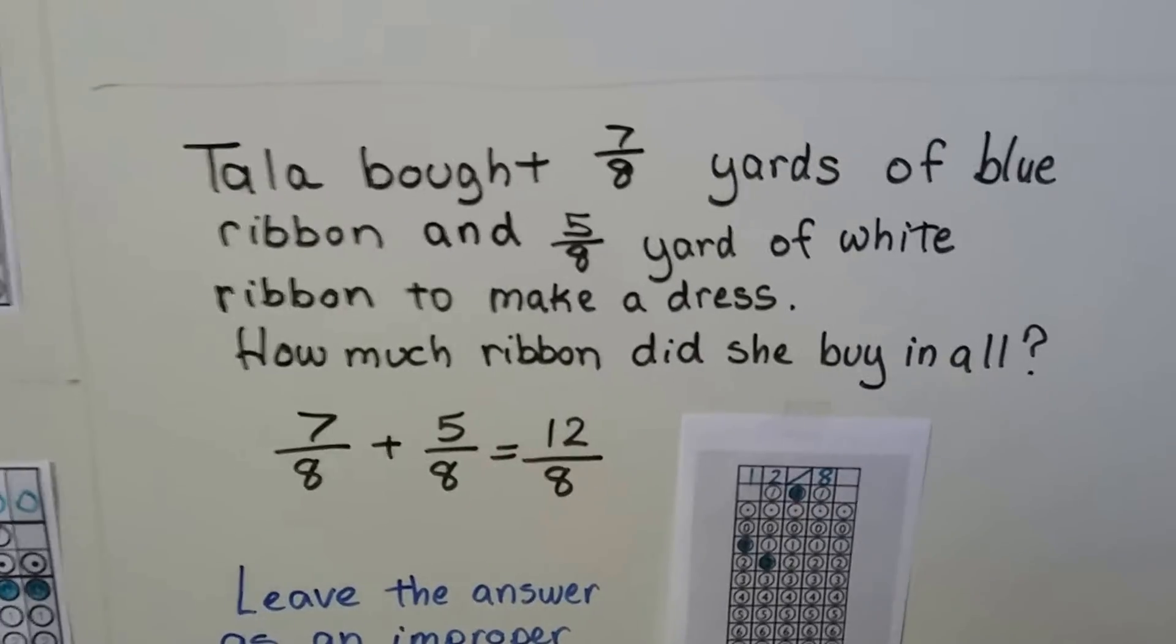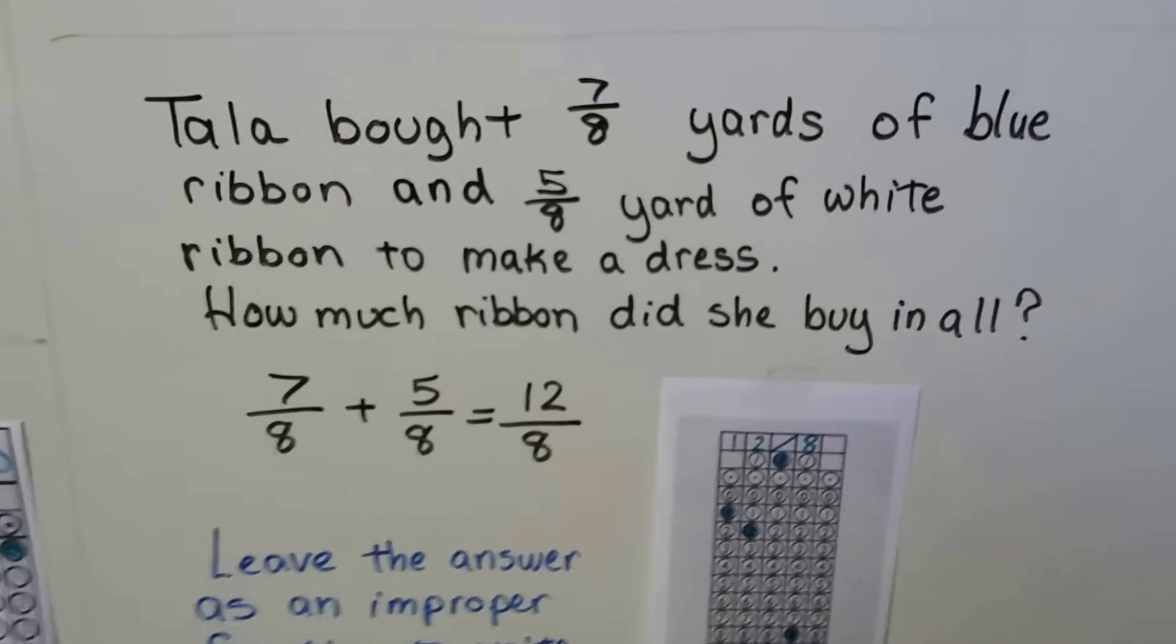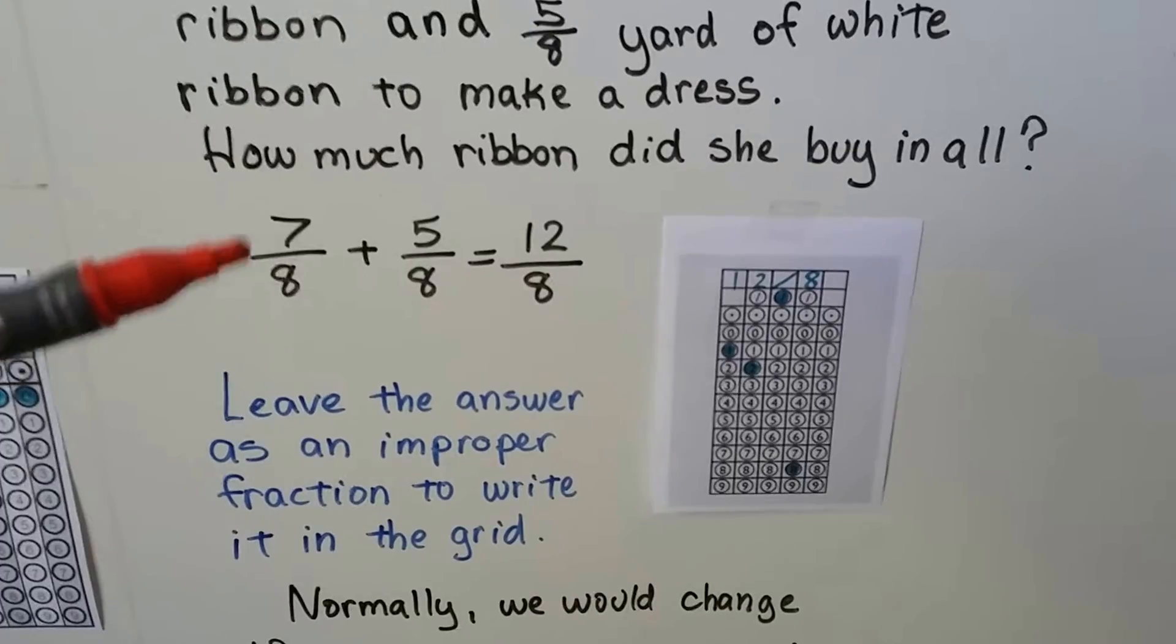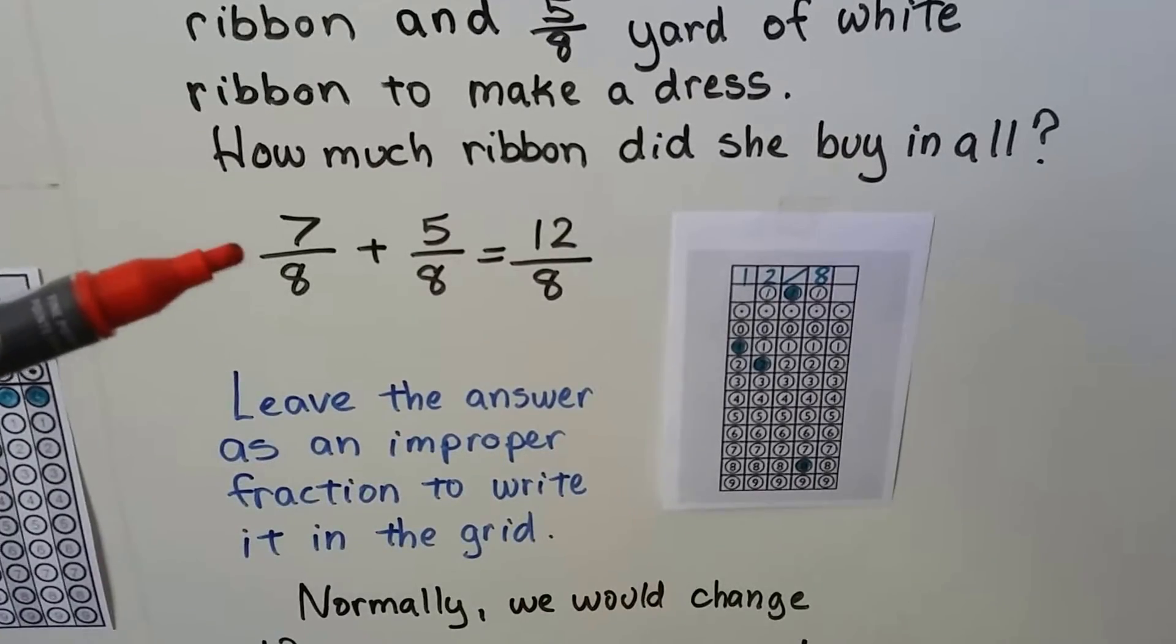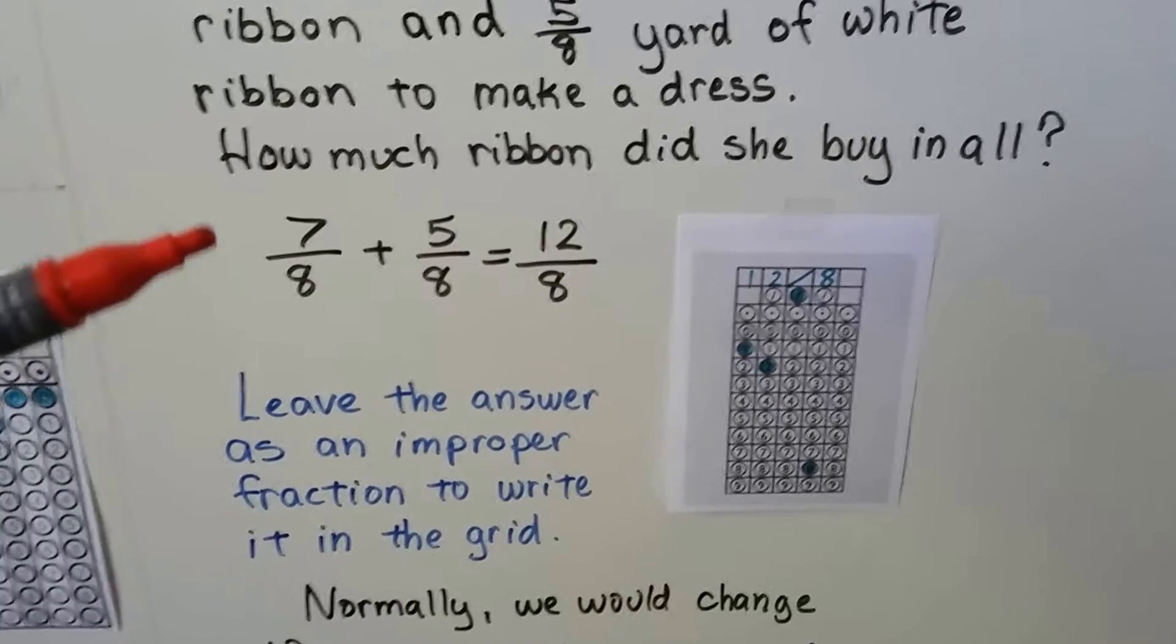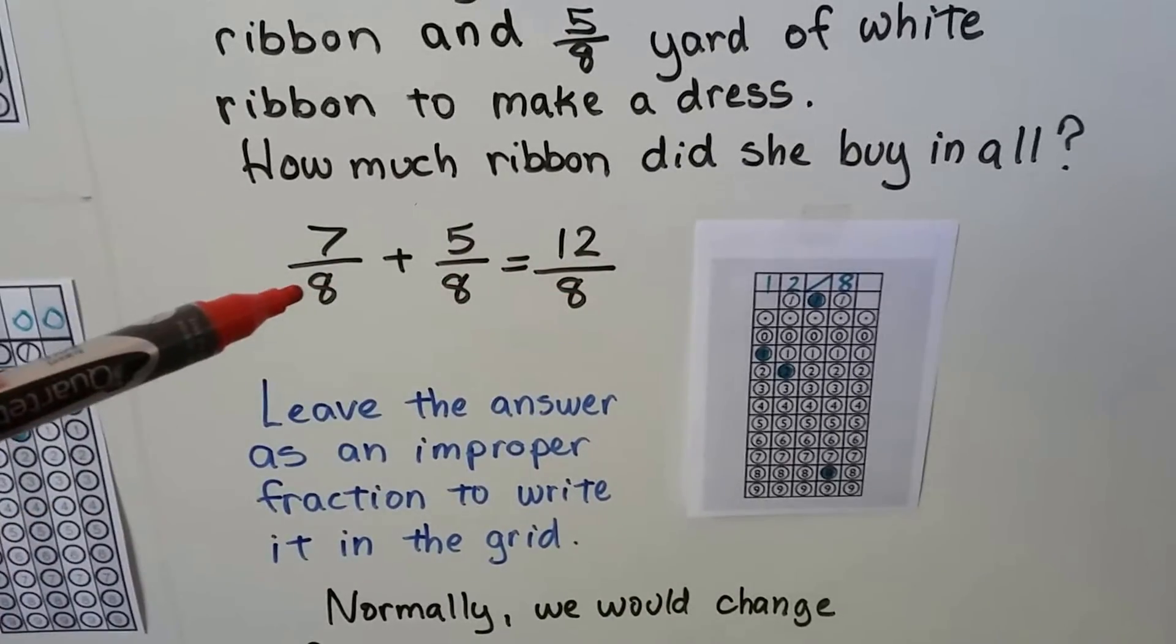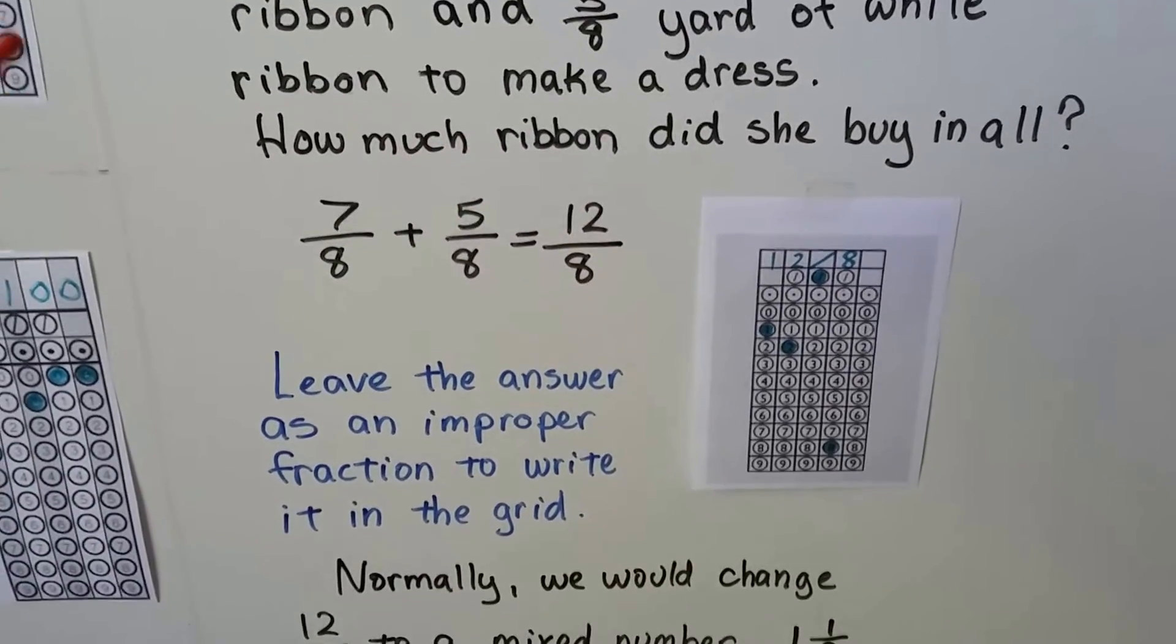Tala bought seven-eighths yard of blue ribbon and five-eighths yard of white ribbon to make a dress. How much ribbon did she buy in all? Now we're actually going to get into adding and subtracting and multiplying and dividing fractions in lesson seven, the next video and the video after that. But we did talk about having the same denominator. If we have seven-eighths and we add it to five-eighths, that's going to give us 12-eighths.